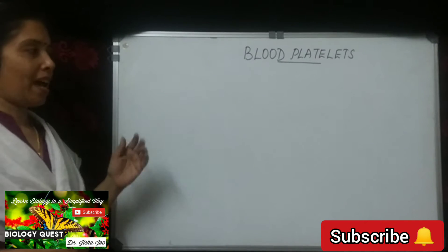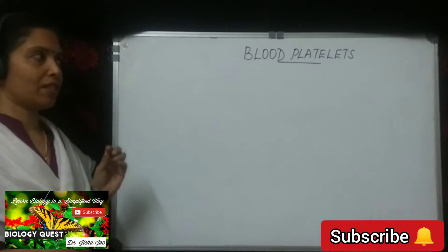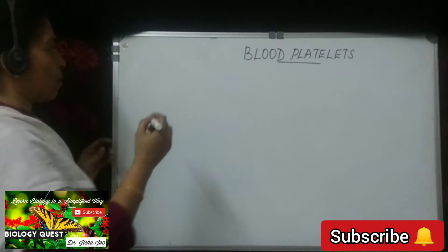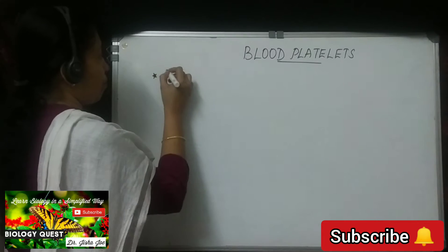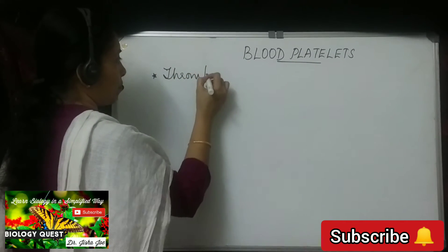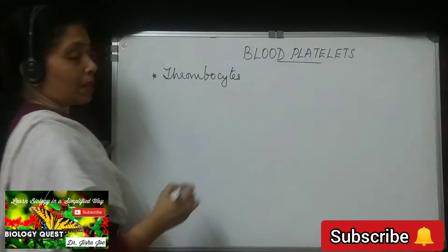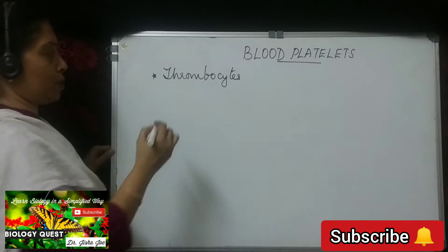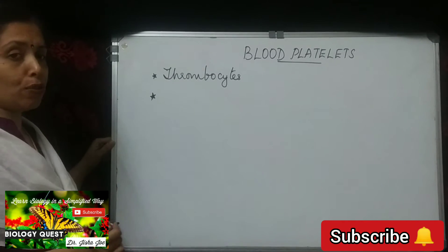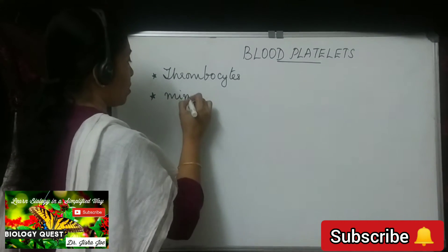Let us first have a look at the characteristic features of blood platelets. Blood platelets are also called as thrombocytes. Coming to their shape, they are minute oval or rounded structures.